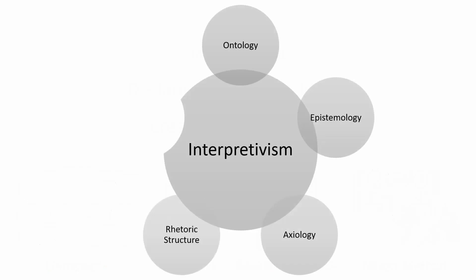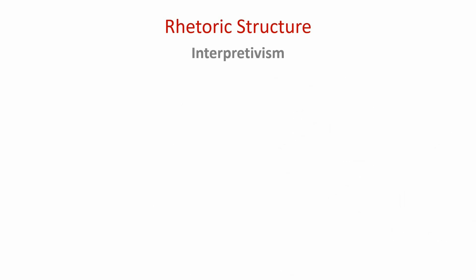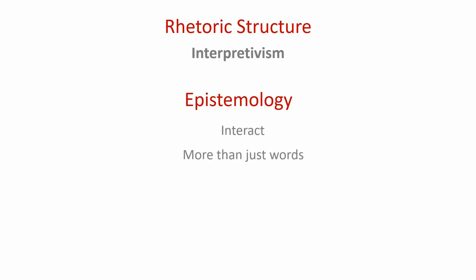Let's take a break from the ologies and focus on rhetoric structure. Rhetoric structure describes how we write about knowledge — how the information uncovered in the study is presented to the intended audience. It speaks to language use, graphs, models, and anything that shows up on the paper for the reader to digest. Rhetoric structure is closely related to axiology and epistemology. From an epistemological perspective, the interpretivist researcher needs to interact with their participant. We need to find out how they arrive at meaning, so we need to look at more than just words — what they say and how they say it. Body language plays a role here.